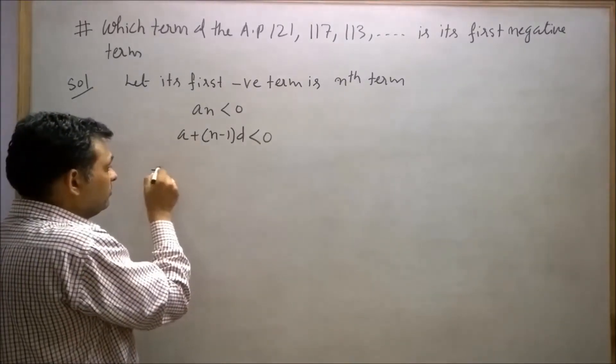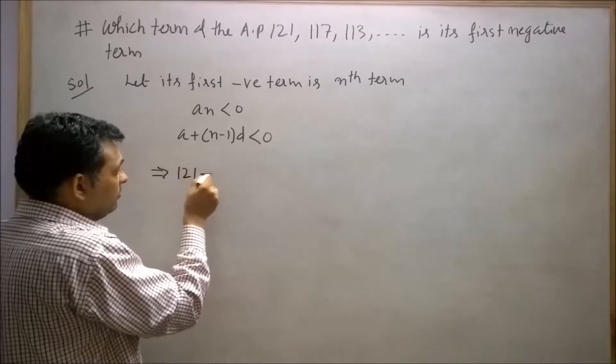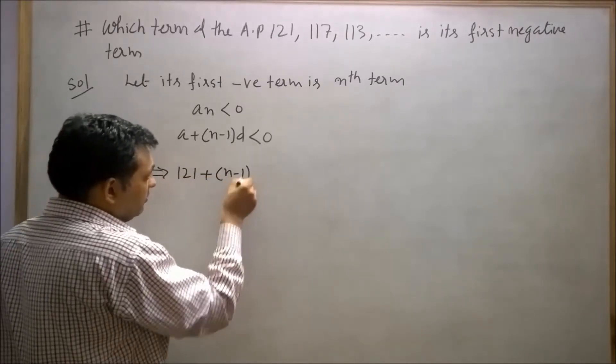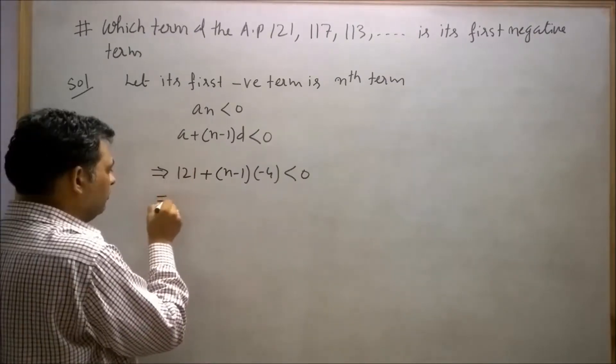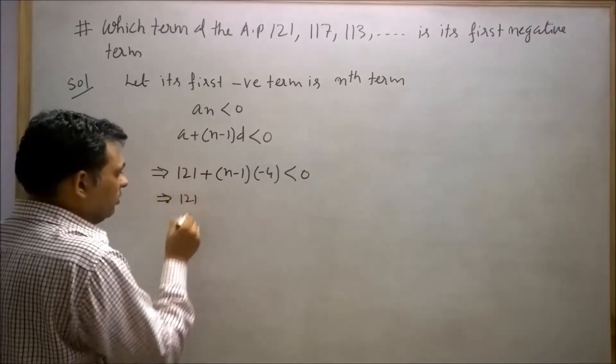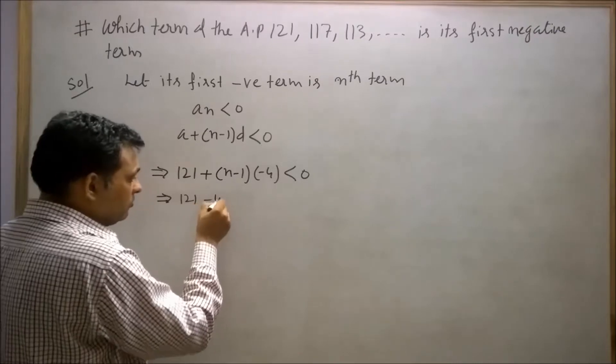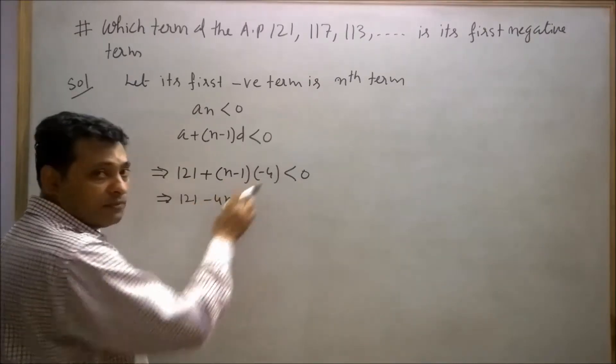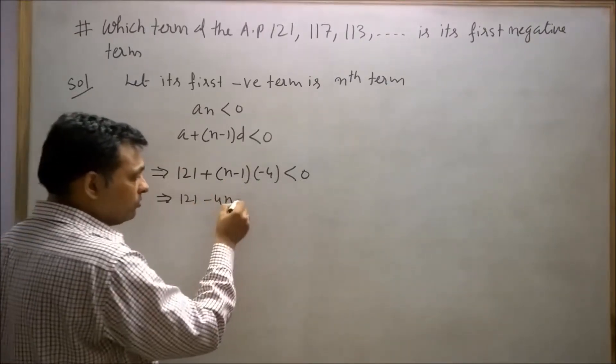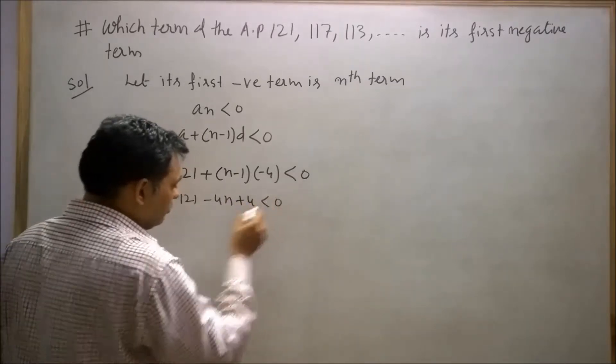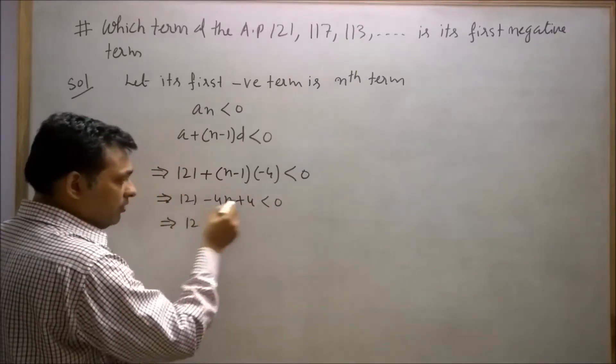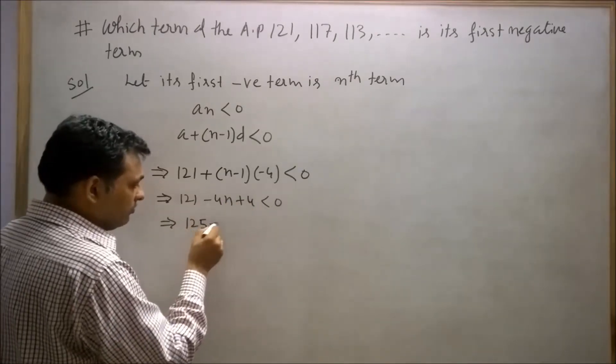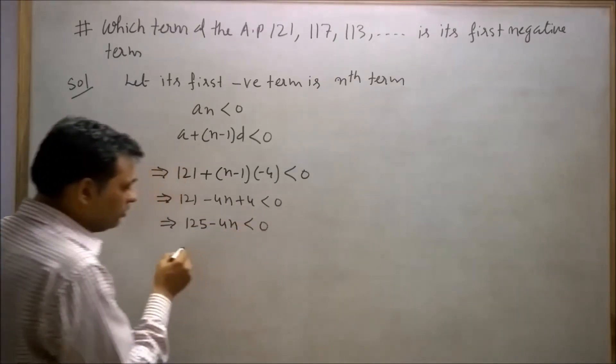We can say 121 + (N-1)(-4) < 0, which implies 121 - 4N + 4 < 0, which implies 125 - 4N < 0.